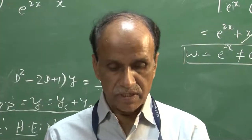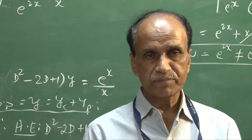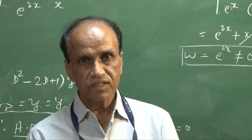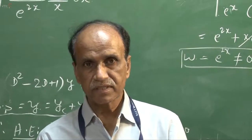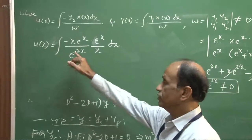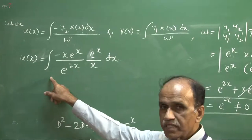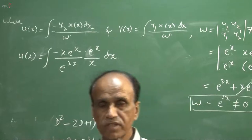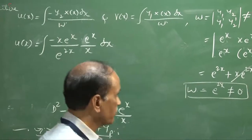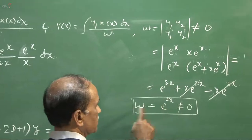Dear students, I will complete the problem which I kept incomplete in my previous lecture on the method of variation of parameters. We need to find the two parameters ux and vx. Up to here we discussed the calculation of ux, how this works with the help of the Wronskian, which is e to the power 2x.